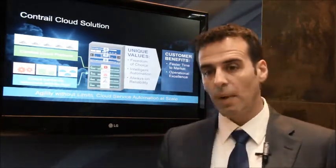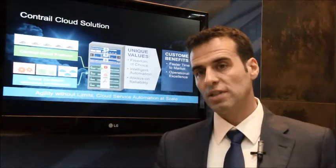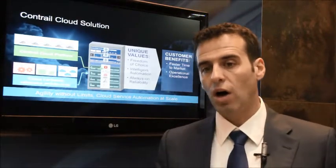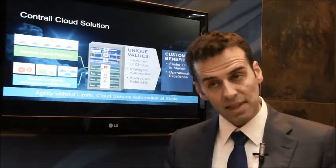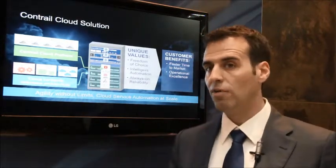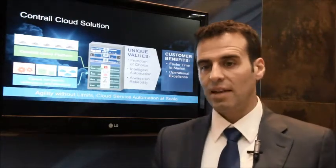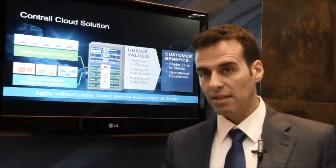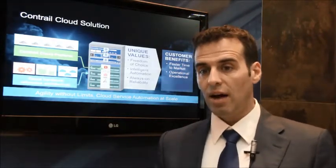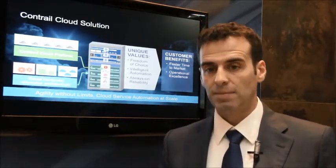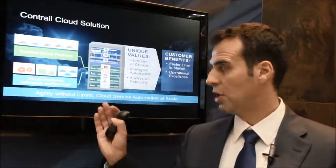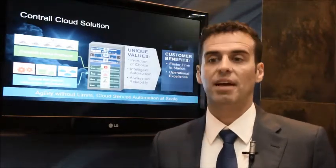The solution brings intelligent automation and always-on reliability that Juniper has tested and can prove to customers. Ultimately, the customer benefits will be that their services are faster to market and operationally excellent from day one because everything has been tested. This delivers agility without limits — cloud service automation at scale.